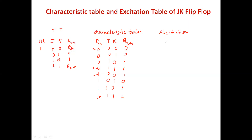In the excitation table, we predict the minimum number of inputs required to produce a desired output transition. The inputs become Q(n) and Q(n+1), and we predict the required values of J and K. The excitation table is very important especially when designing counters using JK flip-flops — it plays a critical role in designing modulo counters. The four input combinations are: 0→0, 0→1, 1→0, and 1→1.